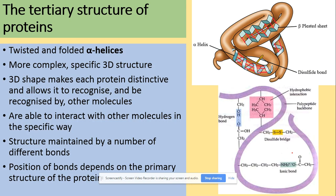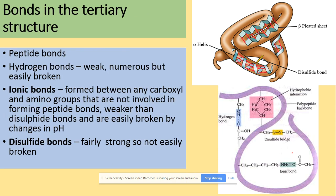Tertiary structure is a twisted and folded alpha helix — more complex, with a specific 3D structure. That 3D shape makes each protein specific and allows it to recognize and be recognized by other molecules, interacting with them in a specific way. The structure is maintained by a number of different bonds, and the position of those bonds depends on the primary structure of the protein. We've got peptide bonds between the amino acids and hydrogen bonds from the secondary structure — those are weak and easily broken.